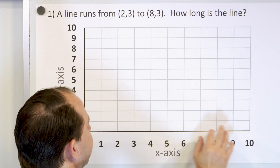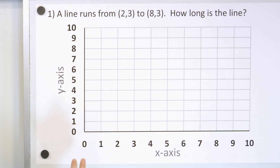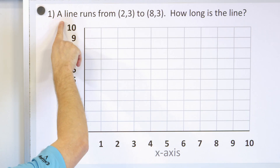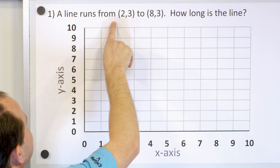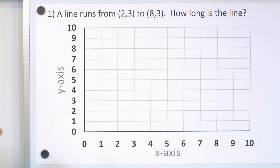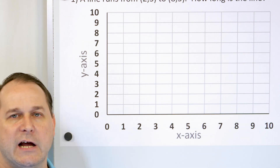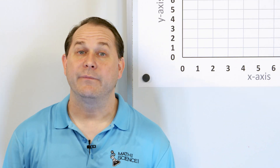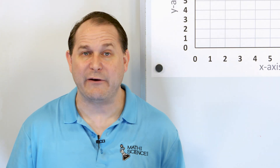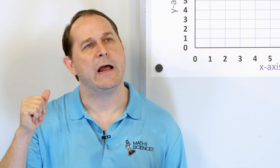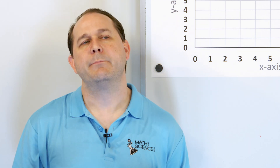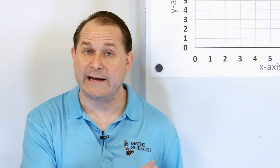Here we have our coordinate plane, and we have the question: a line runs from 2,3 to 8,3. How long is the line? Now, if you don't draw a graph of this, it's very hard for us to just look at that and say, I know how long that line is. But by plotting it, we can see what we're trying to do here.